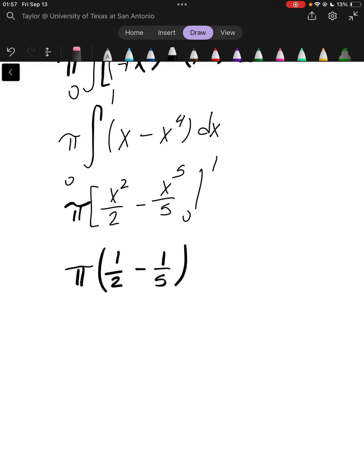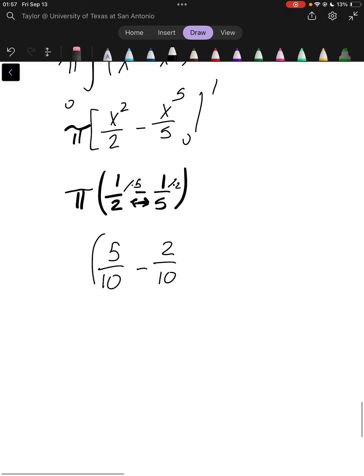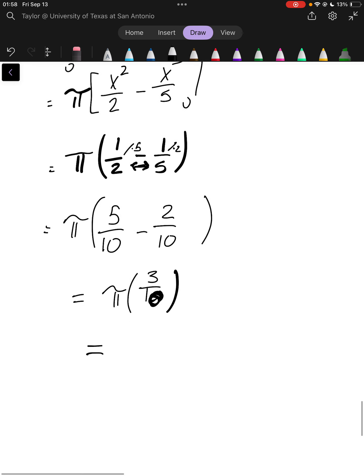All right. So we're going to do some fraction subtraction here. I'm going to find a common denominator between the two of these, which would be 10. So we're going to multiply this by 5 and this by 2, giving me 5 over 10 minus 2 over 10 equals pi times 3 over 10. Giving us 3 pi over 10.